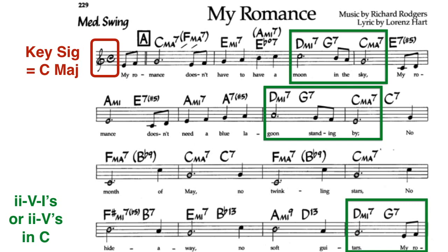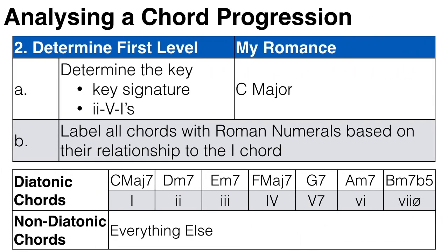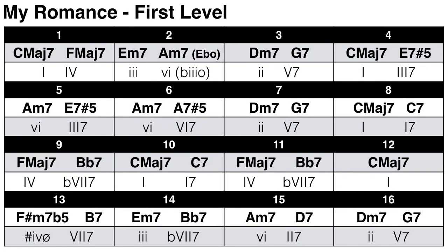Looking at 'My Romance,' the key signature is C major. Section A ends with a 2-5-1 in C, with the C7 being a kind of pickup or anacrusis chord leading to the next section, and section B ends with an incomplete 2-5 in C. So it's pretty clear the song is written in C major. We then label all the chords with Roman numerals relative to the C major 7 chord, and I find it helps to write out all the diatonic chords of the key for reference.